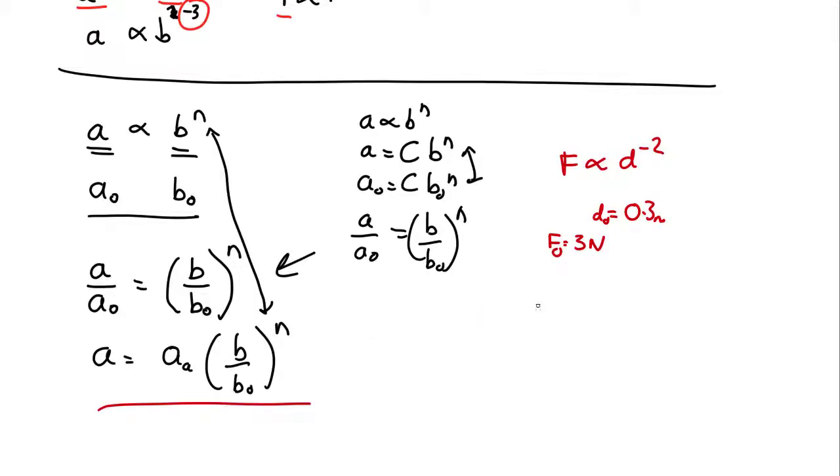So, using this equation, the force we want will be equal to the force we know, 3 newtons, times the new distance 12 metres over 0.3 to the power of minus 2, which is equal to 0.0019 newtons.